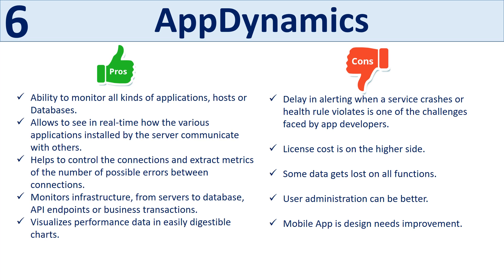Pros of AppDynamics include the ability to monitor all kinds of applications, hosts, and databases; synthetic monitoring of applications; real-time visibility into how applications installed on a server communicate with others; control of connections and extraction of error metrics between connections; great infrastructure monitoring from service to database, NRP endpoints, or business transactions; easily digestible performance charts; one-click metric exploration to drill down into performance influences; and a great zoom feature for specific time ranges. Cons include delay in alerting when a service crashes or a health rule is violated, high license costs, and some data loss on certain functions.